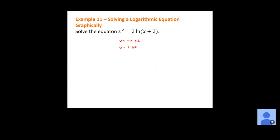The two solutions are negative 0.712 and positive 1.601. Just because we get a negative x value does not mean it doesn't work. If you substitute negative 0.712 in and add 2, you get a positive value inside the logarithm, which is fine. Don't assume negative values don't work — you need to substitute them in and check that the value inside the logarithm is positive.